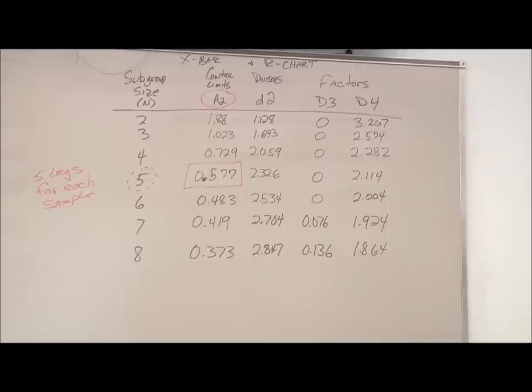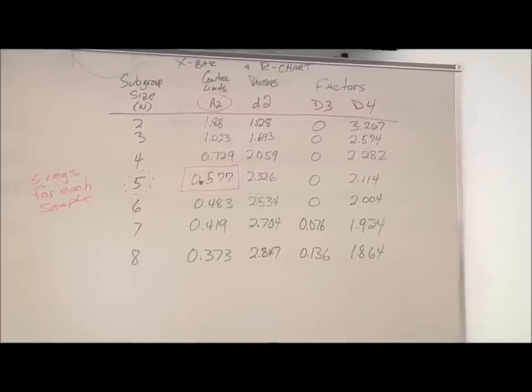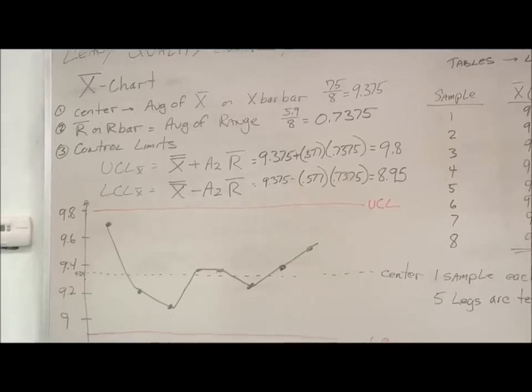So we don't have to calculate the numbers. They're given to us in a chart. It's more important to know what they mean. The subgroup size is the number of measurements you average together to get your mean.